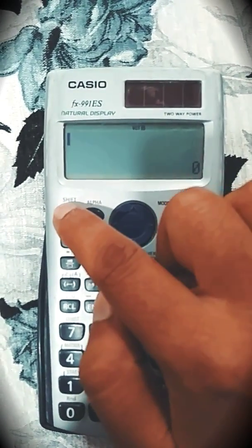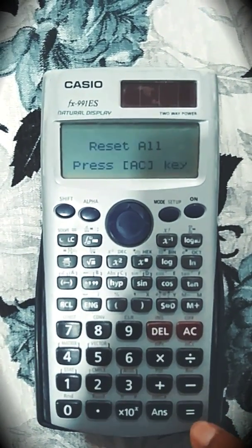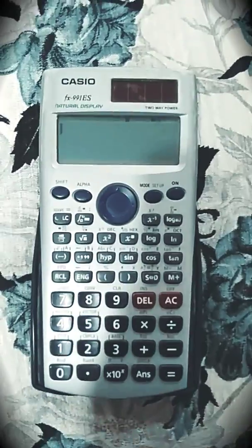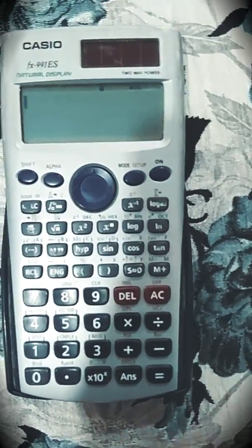So now to clear all these modes, shift 9, 3, equal to, press AC. So the mode will be by default competition mode.